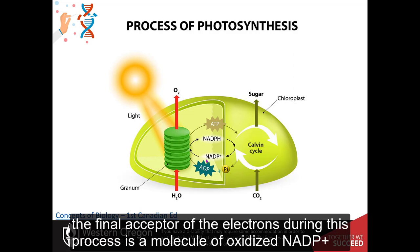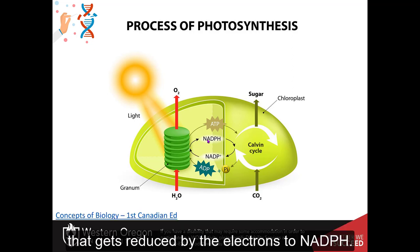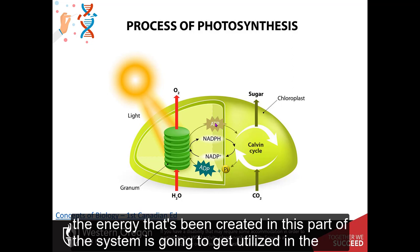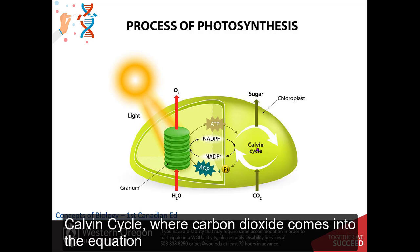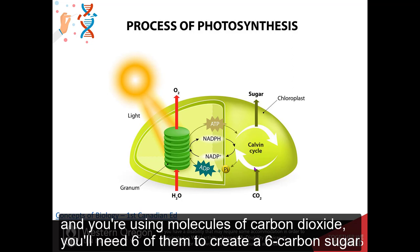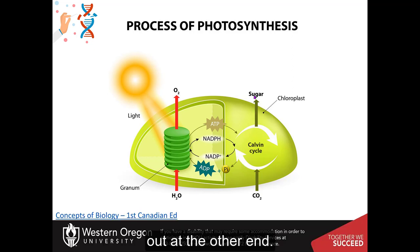The final acceptor of the electrons during this process is a molecule of oxidized NADP that gets reduced by those electrons to NADPH. The energy that's been created in this part of the system is going to get utilized in the Calvin cycle, where carbon dioxide comes into the equation. And you're using the molecules of carbon dioxide. You'll need six of them to create a six-carbon sugar out at the other end.